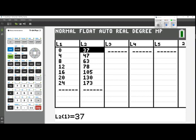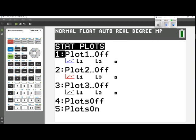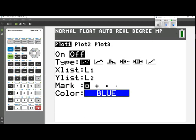And the first thing we want to do with it is make a scatter plot. So we need to go into the stat plot window, which is 2nd y equals, go into the menu for stat plot 1 and turn it on, and make sure it's a scatter plot using list 1 and list 2.